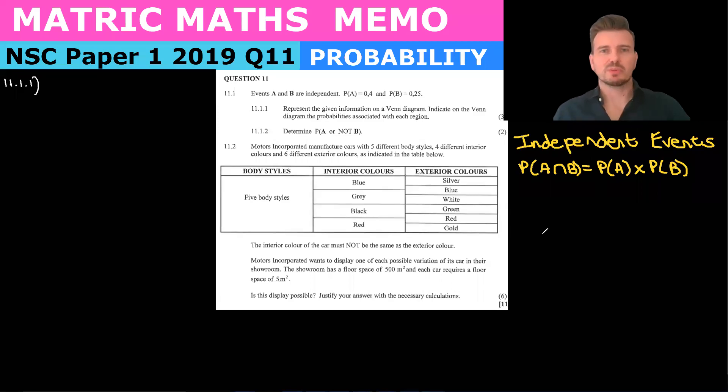Hello Matrix and welcome again. Today we are finishing off our memo for the 2019 paper one, the NSC government paper, and we are finally on our last question which is question 11. It's a probability question.